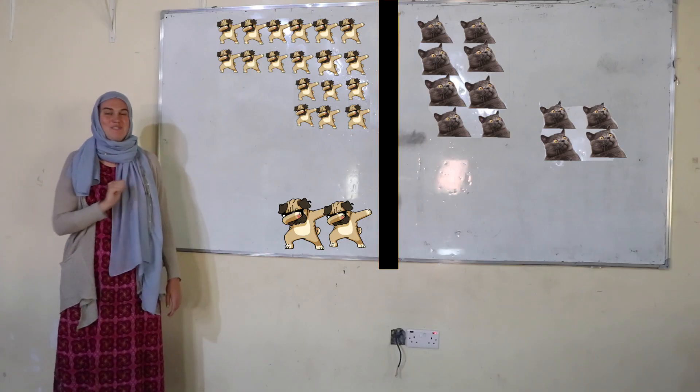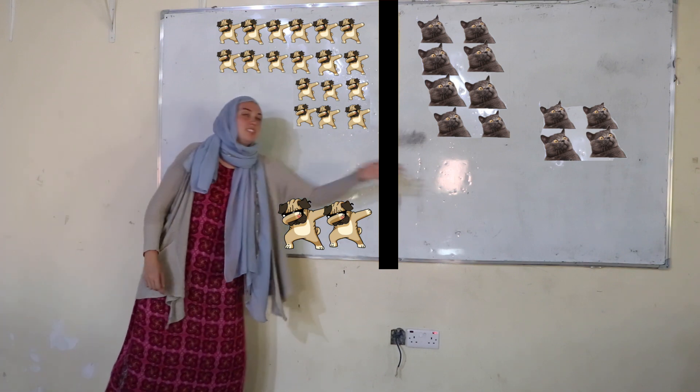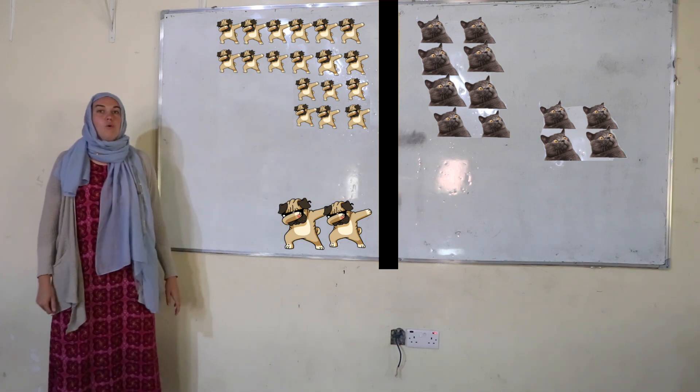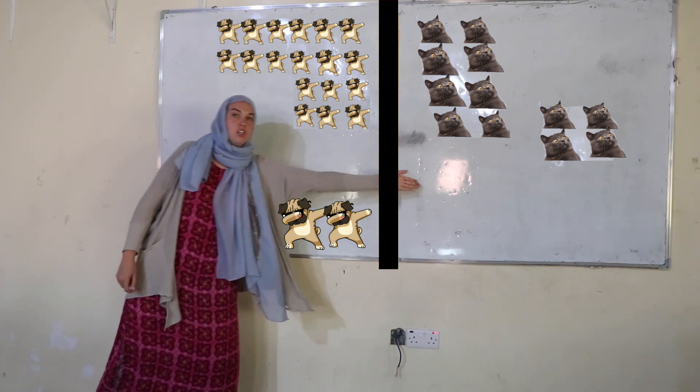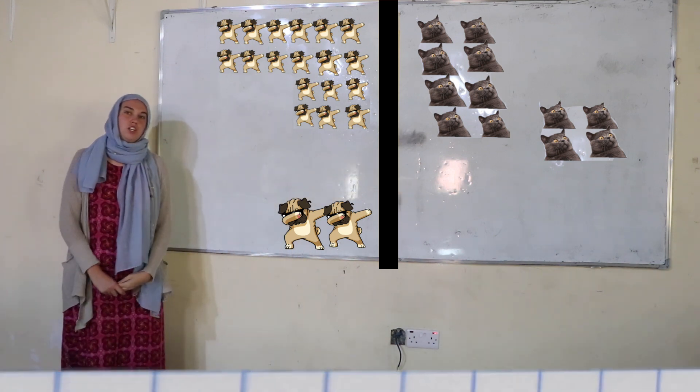Now, let's try another problem. We have 12 cats and 20 dogs in a shelter. What is the ratio of our cats to the total number of pets in our shelter?